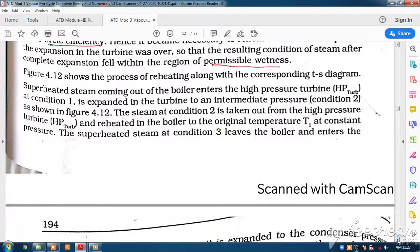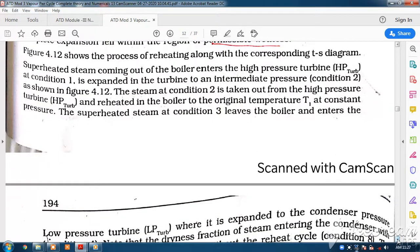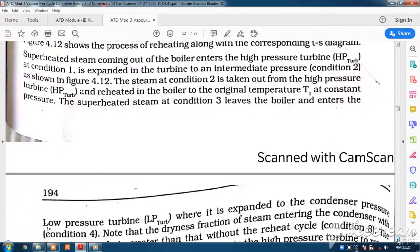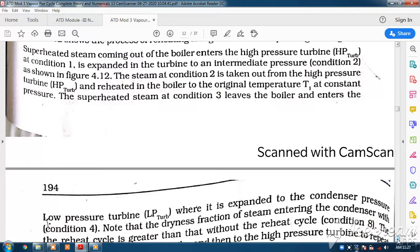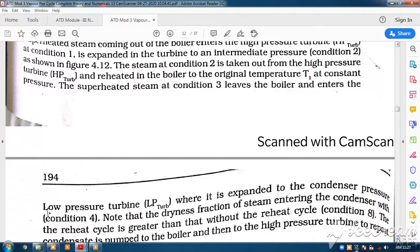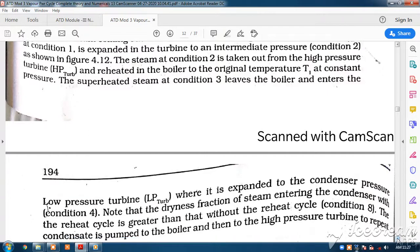Superheated steam coming out of the boiler enters the high pressure turbine in condition 1 and is expanded in the turbine to an intermediate pressure condition 2 as shown in the figure. The steam at condition 2 is taken out from the high pressure turbine and reheated in the boiler to the original temperature T1 at constant pressure.